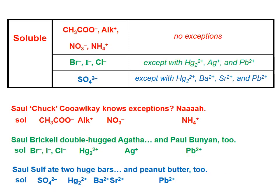Let's take the ions that tend to be soluble in aqueous solution first. If we look at the top of the screen, in red, we have the acetate ion. This is my abbreviation for any alkali metal ion — ALK with a plus symbol — the nitrate ion, and the ammonium ion. These have no exceptions with regard to solubility. Any compound that has any of these ions in it is soluble.